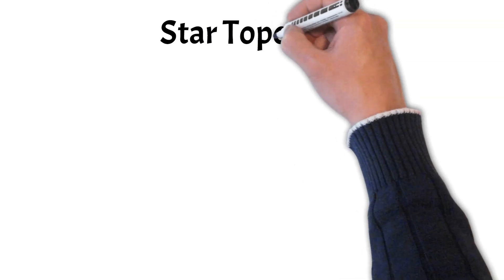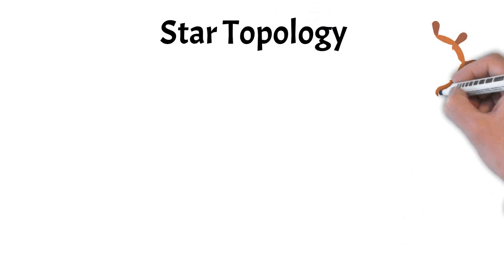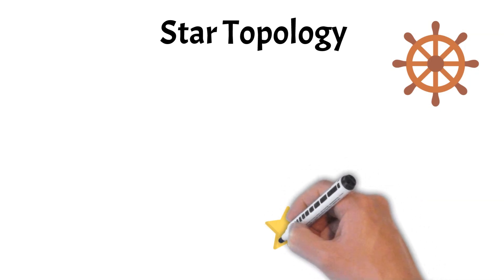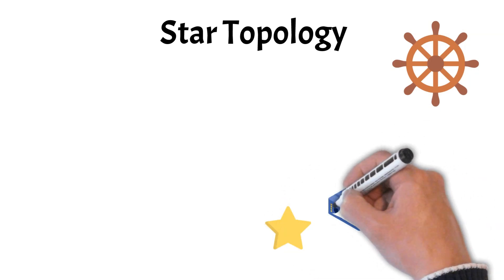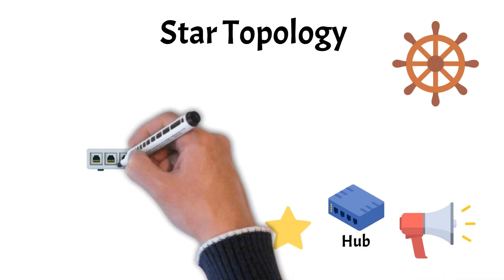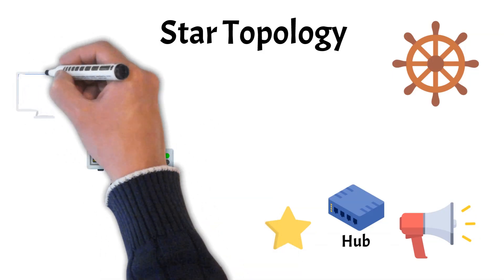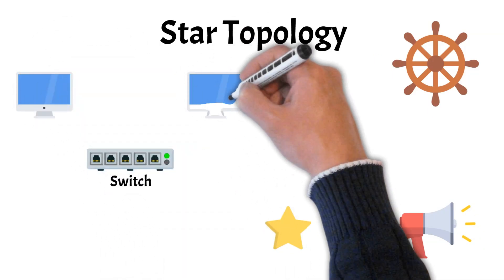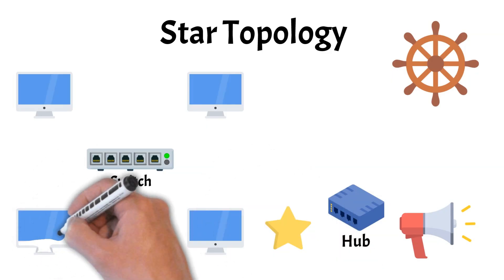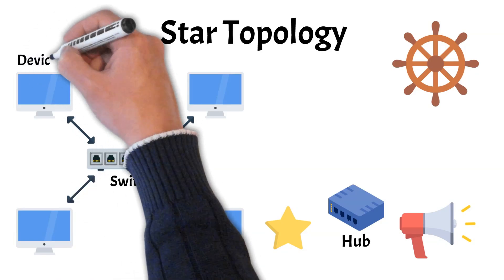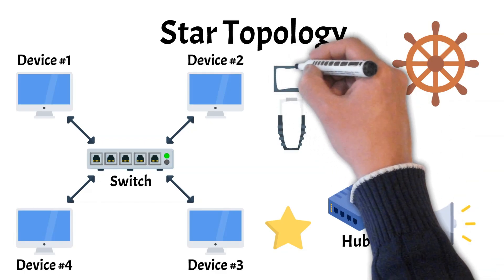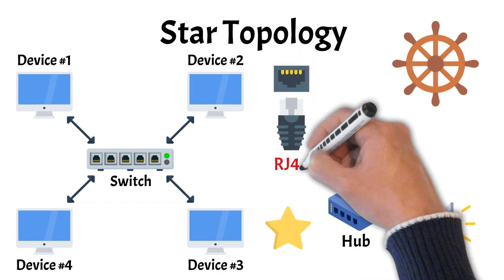Next we have the star topology. The star topology gets its name from the way it looks when drawn out — a central point with lines radiating outward, like the spokes of a wheel or a shining star. At the center sits a hub, or more commonly today, a switch, and each device in the network connects directly to it with its own cable. This makes the structure simple to understand and easy to manage. Several devices can connect at once, making it a very practical setup for homes, schools, and offices. If one cable breaks, only that device is cut off, while the rest of the network keeps running.